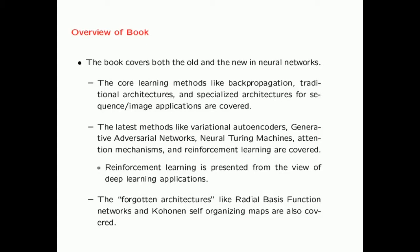In addition to these modern architectures, we also cover some of the forgotten architectures which are not used so frequently anymore. These include radial basis functions and Kohonen self-organizing maps. The reason we have covered these is because even though they are not used so frequently anymore, they are still quite useful in many settings.